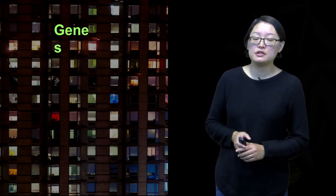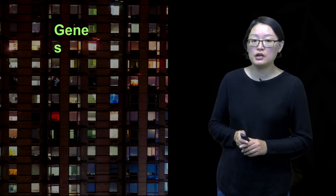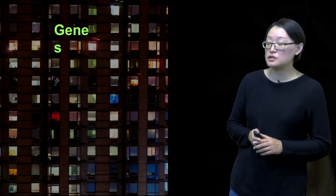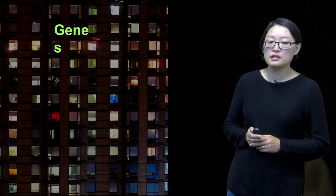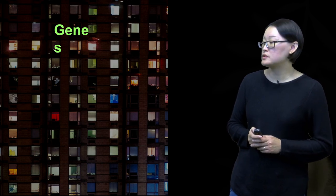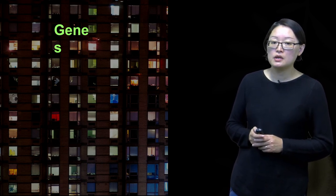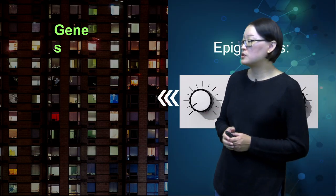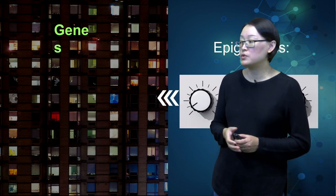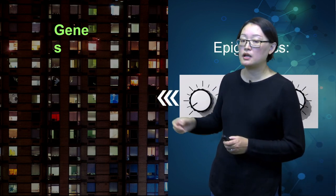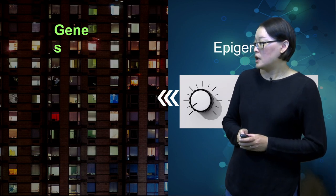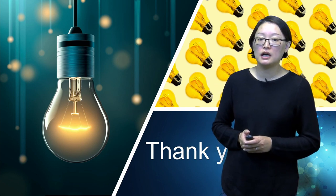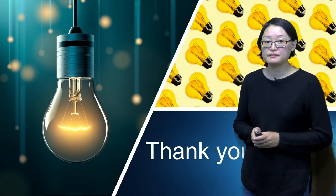To summarize how epigenetics works, think of genes as units in an apartment block. The light being on or off represents genes being turned on or off, and the brightness or dimness of the lights represents enhanced or suppressed gene expression. The role of epigenetics is like a dimmer switch, which decides which lights get turned on and off, and which ones are brighter or dimmer. With this, I thank you for listening to today's talk, and hopefully it has enlightened your understanding of epigenetics. Thank you.